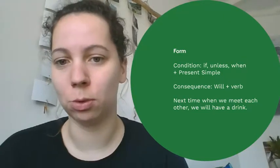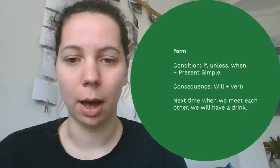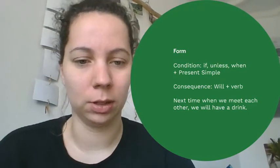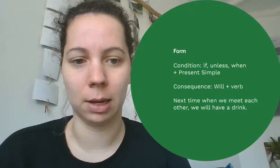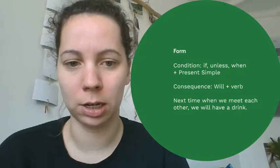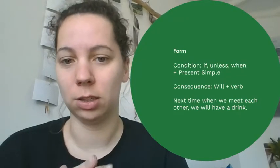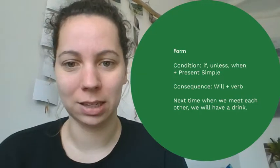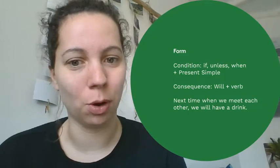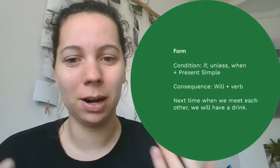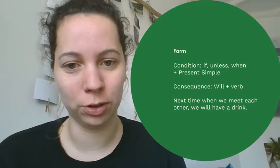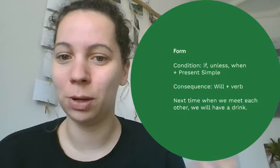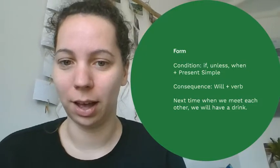The form is very similar to what you've learned for future simple, so if you're not sure about that, I recommend that video. It's just 'will' plus full verb. For example: 'Next time, when we meet each other, we will have a drink.' The condition is 'when we meet each other' — 'meet' is present simple. The consequence is 'we will have a drink' — 'will' plus full verb.